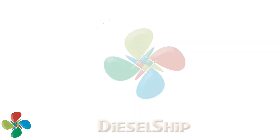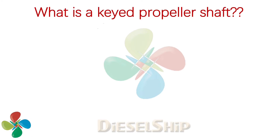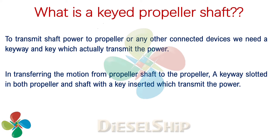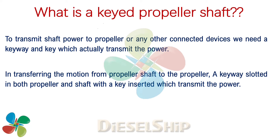Before we see keyless propellers, we should first understand what a keyed propeller shaft is. To transmit shaft power to a propeller or any other connected devices — such as impellers in a pump, a pulley in an engine, or any chain-driven power transmission circuit — shaft power is transmitted through a key. In transferring motion from the propeller shaft to the propeller, a keyway is slotted in both the propeller and the shaft, with a key inserted which actually transmits the power.